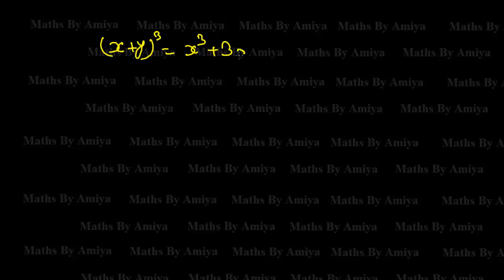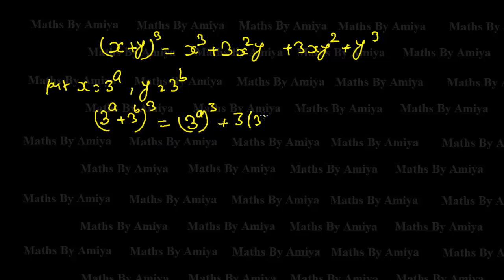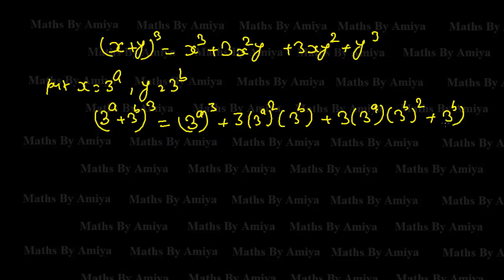The concept is quite simple. We just need to know (x + y)³ because we are looking for a perfect cube. So (x + y)³ is nothing but x³ + 3x²y + 3xy² + y³.